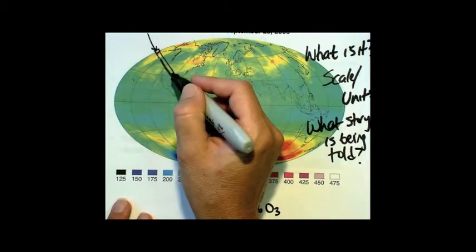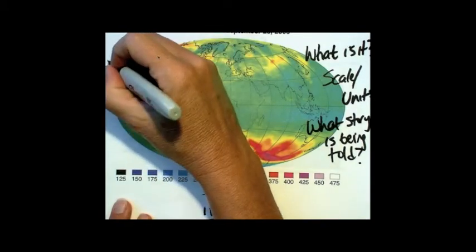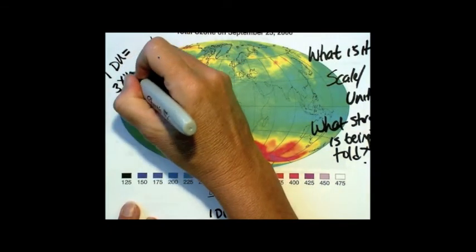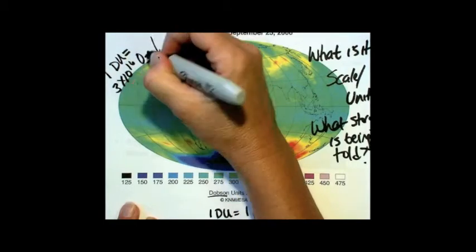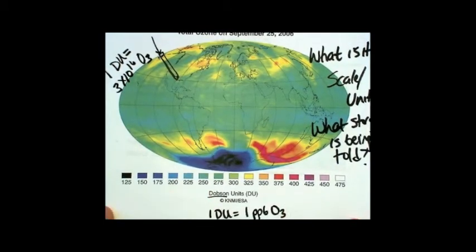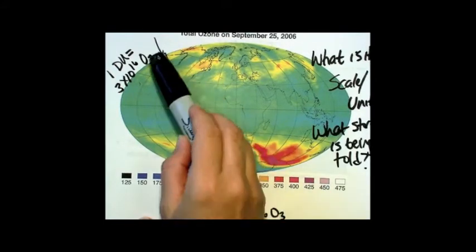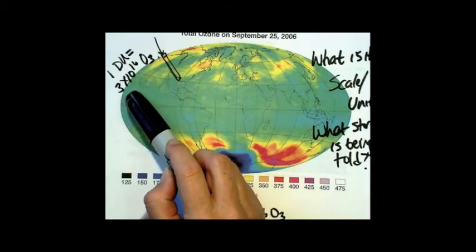And in that regard, given the total number of particles that would be there, that corresponds to, in the column, one Dobson unit corresponds to three times 10 to the 16th ozone molecules in that column. So that's the scale that they're really using right here. They're sort of correcting for the fact that you have a column of air and you have billions and billions and billions of total gas particles. And of those billions and billions of particles in that column, one Dobson unit would refer to three times 10 to the 16th ozone.